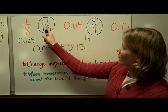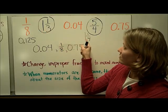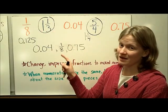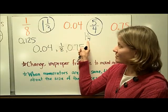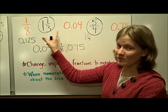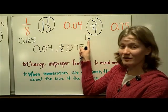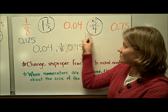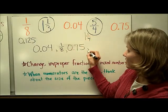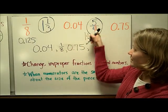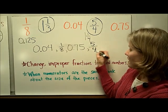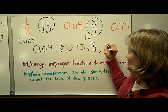Now I'm going to compare 1 and 1 third to 1 and 1 fourth. When the numerators are the same, you look at the denominators. A smaller denominator means a bigger piece; a bigger denominator means a smaller piece. So because the numerators are the same, the fraction with the larger denominator — which I write as five fourths — is going to be smaller, and then the biggest one is going to be 1 and 1 third.